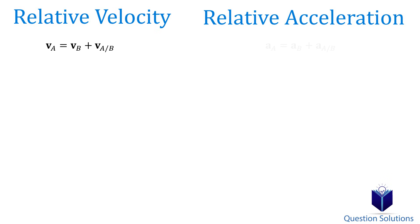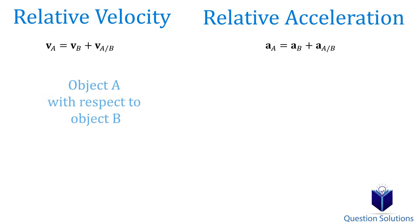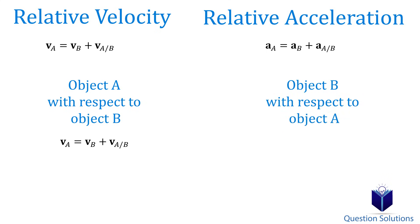This one is for relative velocity and this one is for relative acceleration. Depending on the question, each of these equations can be written in two ways. If a question says you want to find the velocity of object A with respect to B, then the equation will be written like this: vA comes first, then vB, and then it's A over B. If the question says find the velocity of object B with respect to A, we write it like this: B comes first, then A, and then it's B over A. It's important to make sure you get this right or you will end up with the wrong answers. The same goes for acceleration.